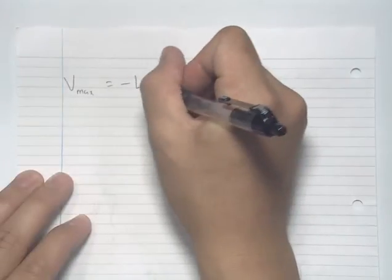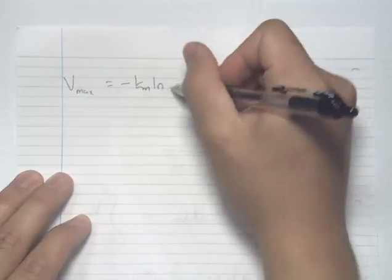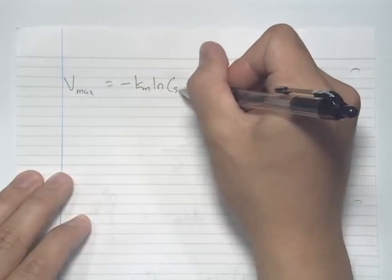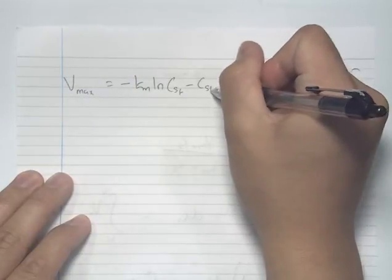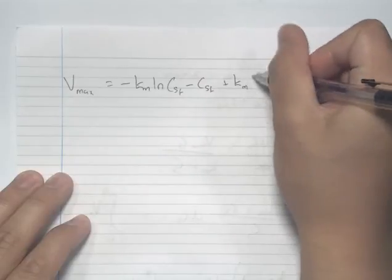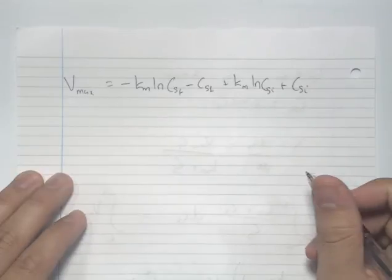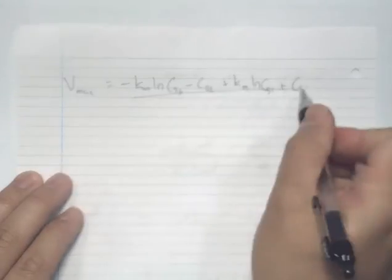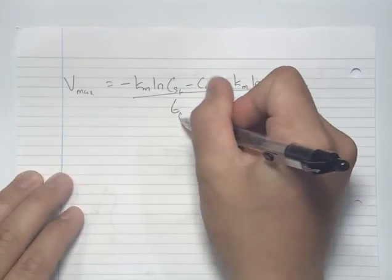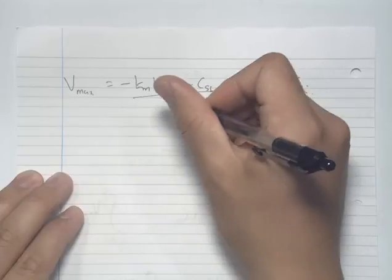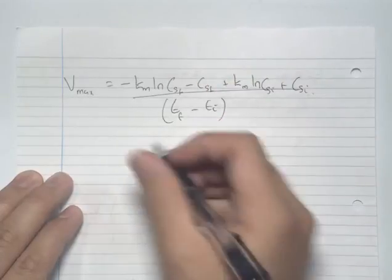Rearranging, since we are solving for the maximum volumetric rate of reaction, we get an expression for Vmax and can set it equal to our derived equation.